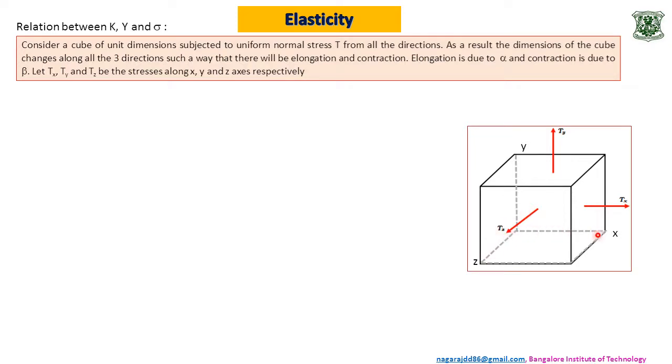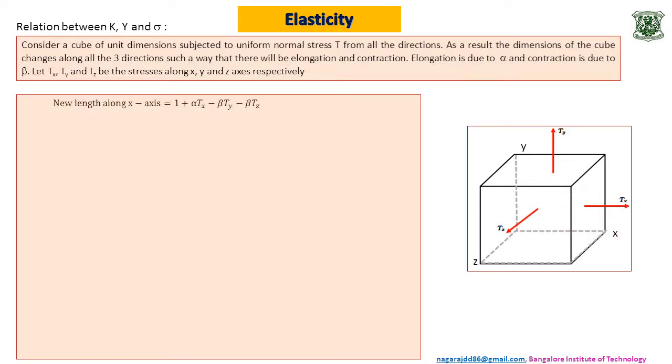As a result we have a totally new length. Initial length was 1m. Now the new length will be along x axis 1 plus alpha Tx minus beta Ty minus beta Tz. The last two terms are due to contraction. Similarly along y axis 1 plus alpha Ty and contraction is due to Tx and Tz. Same thing even for z axis also.